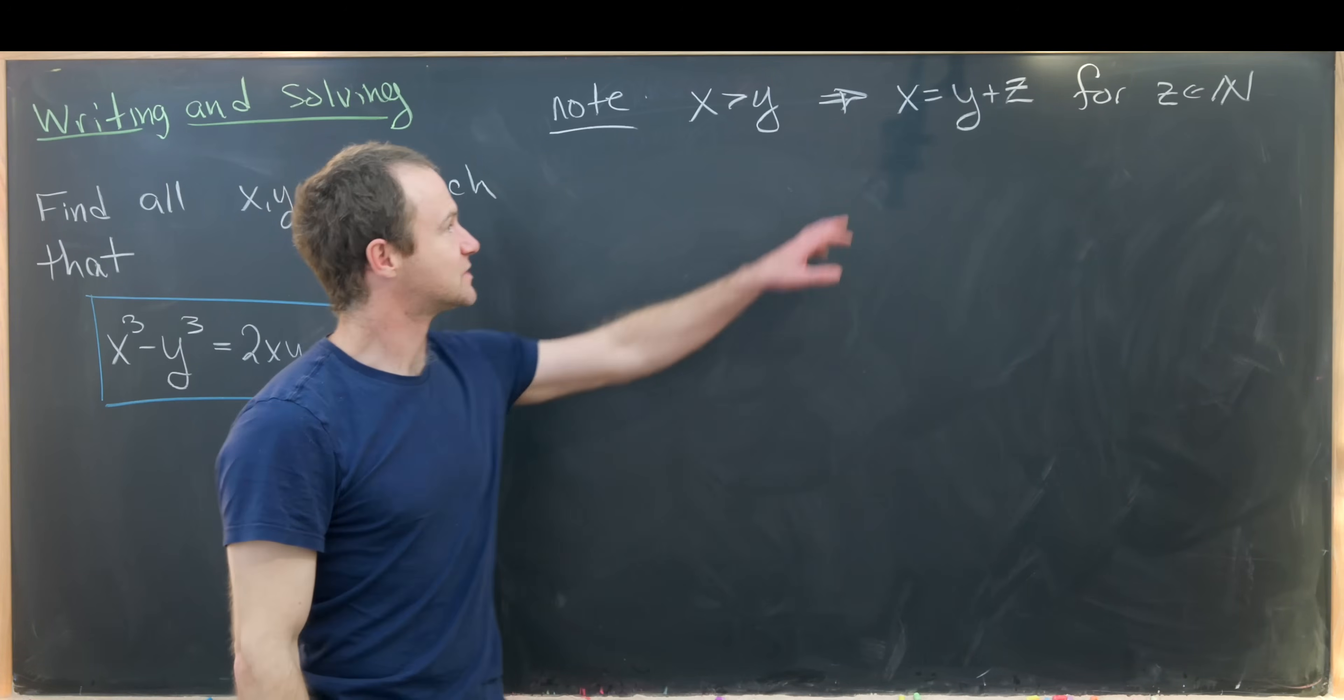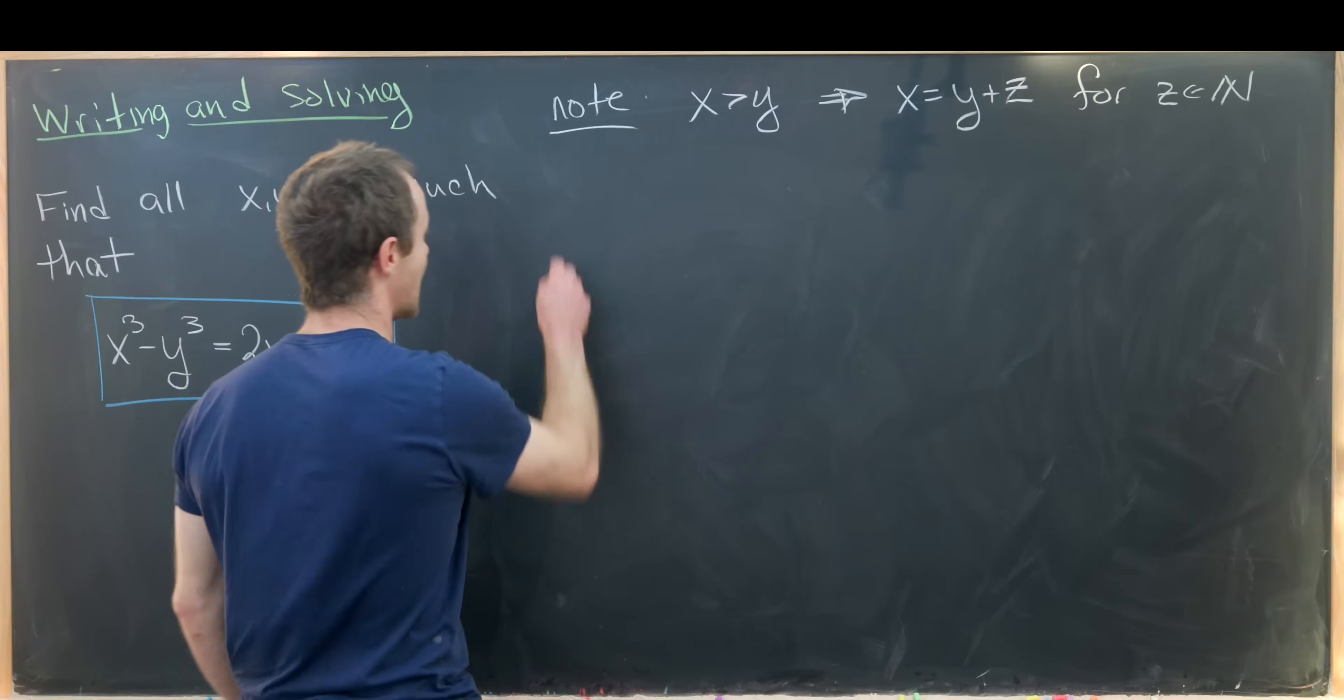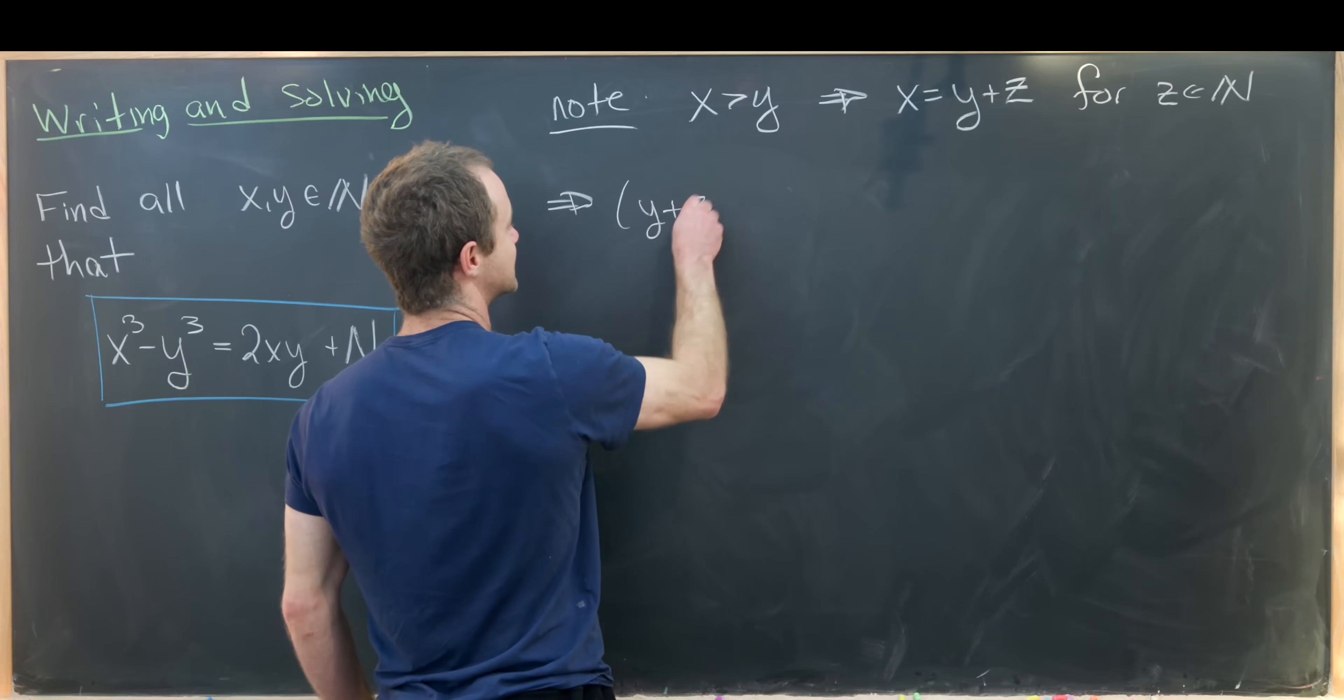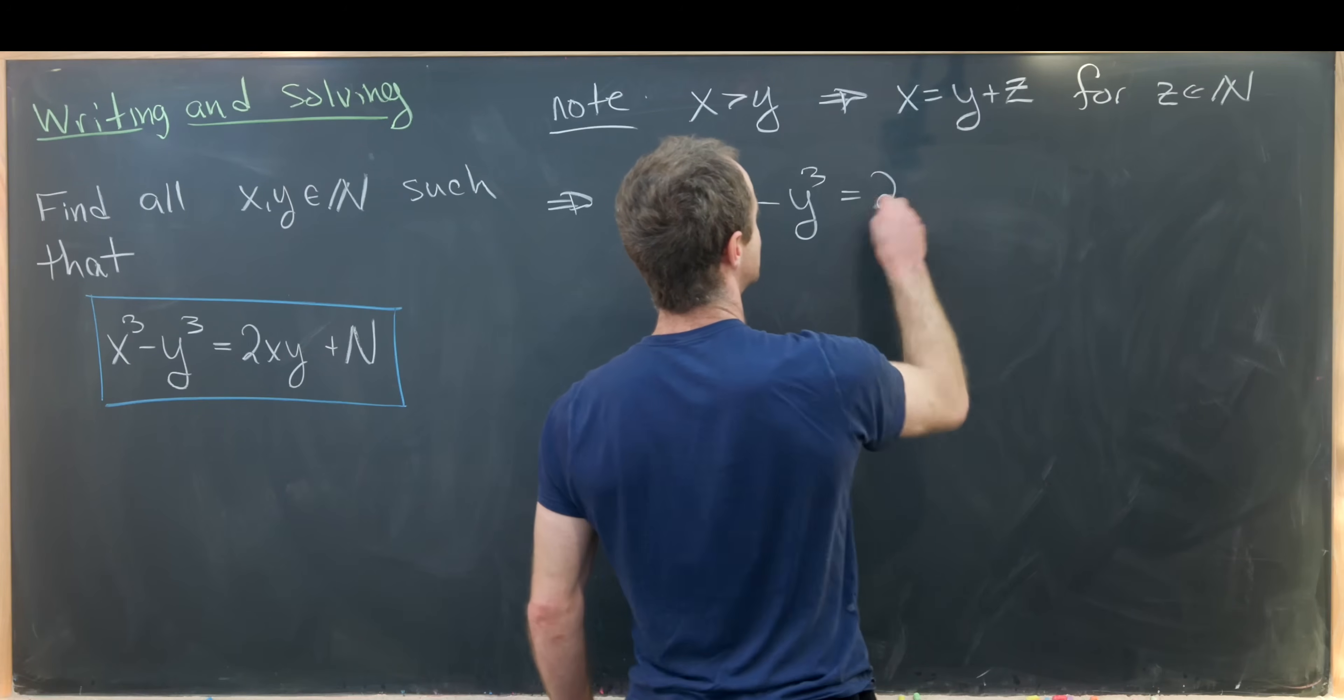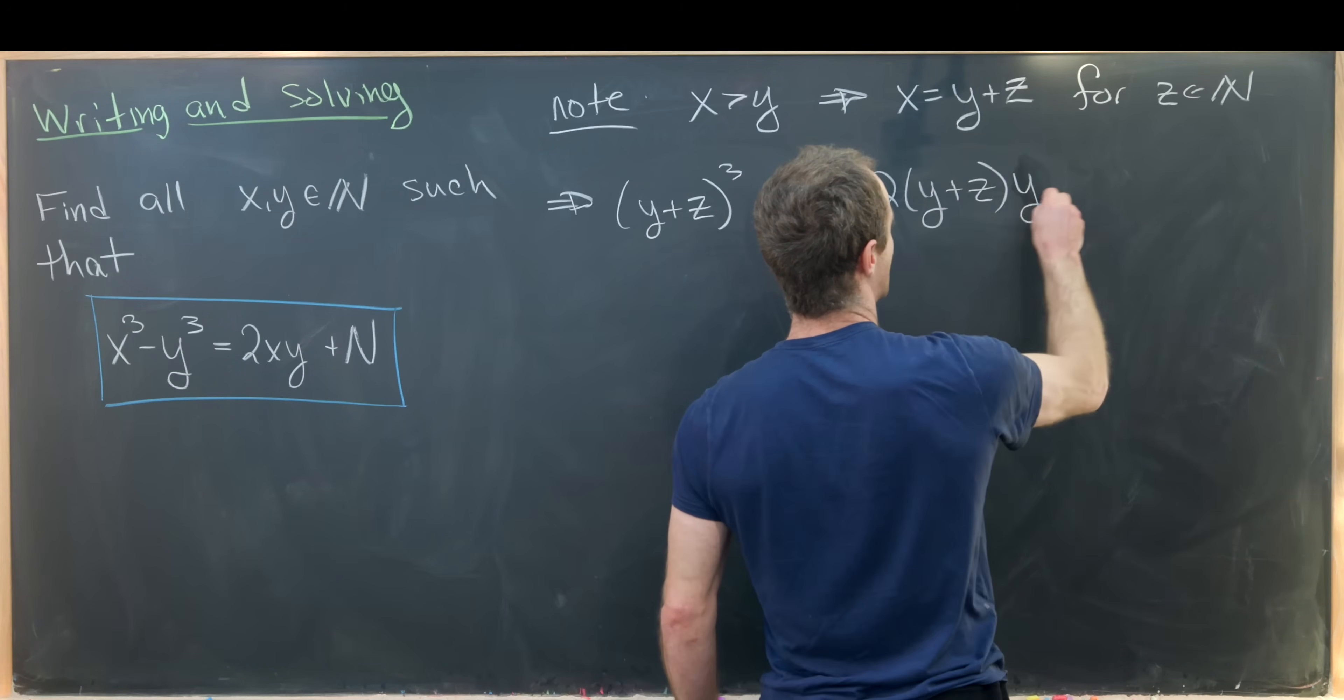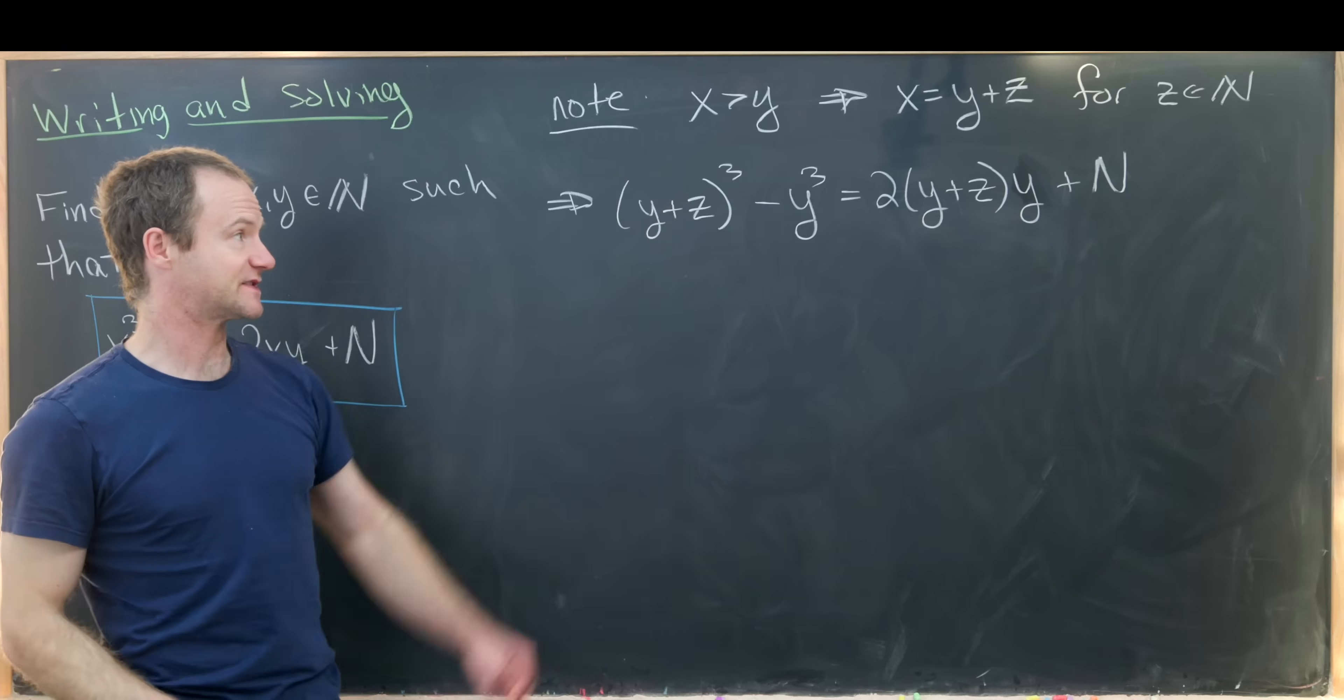Now let's throw this into our equation and see what we have. So that gives us (y + z)³ - y³ = 2(y + z)y + N. That's what we've got after this substitution.